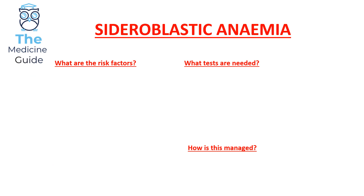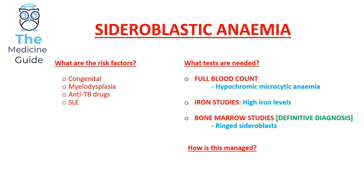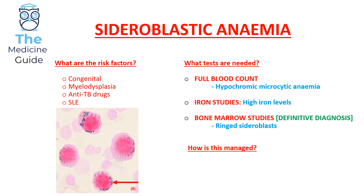The last condition is sideroblastic anaemia, where red blood cells fail to form a haemoglobin molecule and iron is deposited in the mitochondria, creating a ring around the nucleus — this is known as a sideroblast. Risk factors include myelodysplasia, SLE, and anti-TB drugs; it can also be congenital. Tests show hypochromic microcytic anaemia on FBC, elevated iron studies, and ringed sideroblasts on bone marrow biopsy. Management involves treating the underlying cause and considering pyridoxine (vitamin B6) supplementation.